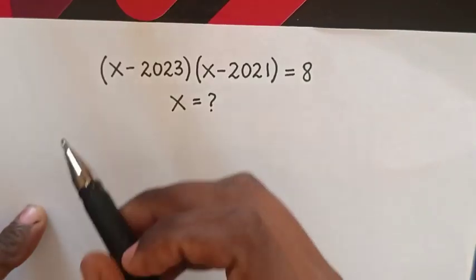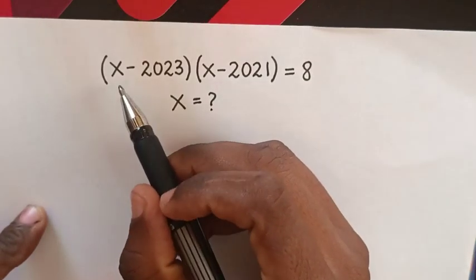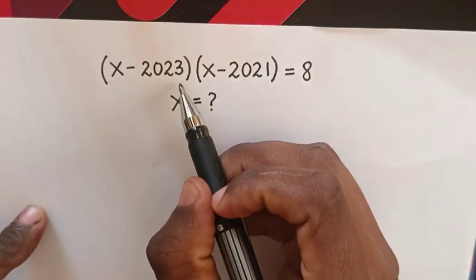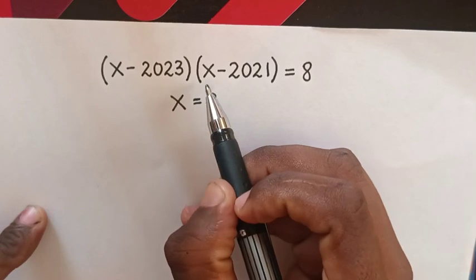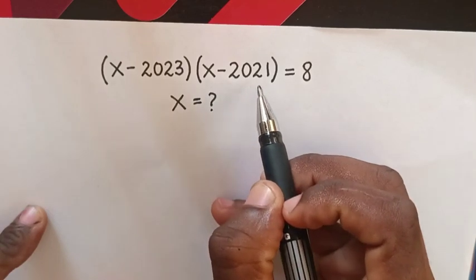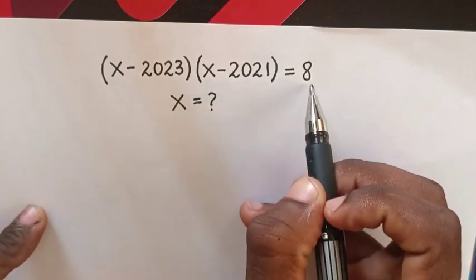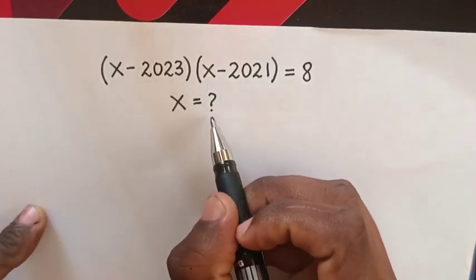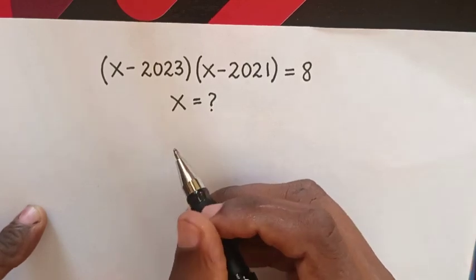Hello, how to solve (x minus 2023)(x minus 2021) is equal to 8, to find the value of x.